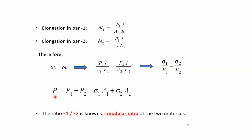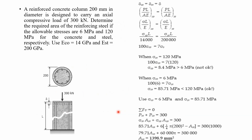We also have the relation P equals P1 plus P2, which can be written as total force equals sigma 1 times A1 plus sigma 2 times A2, since force equals stress times area. The ratio sigma 1 divided by sigma 2 equals E1 divided by E2, and this ratio E1/E2 is called the modular ratio of the two materials. This modular ratio is typically given when analyzing a specific composite bar.